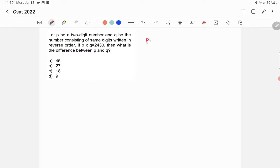So let's say p is xy. So x is a digit, y is a digit. Let's say p is xy. Then q is yx. Right. Because we are getting q when the same digits are written in the reverse order. And it has given that xy into yx is equal to 2430.